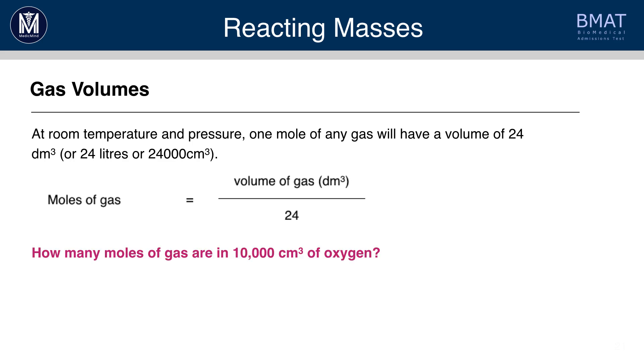How many moles of gas are in 10,000 cm cubed of oxygen? Well, first of all, we can see that the question is in cm cubed. So, you divide 10,000 cm cubed by 24,000, because it's cm cubed, not dm cubed, so it's not 24. And therefore, you get the answer 0.416 moles.